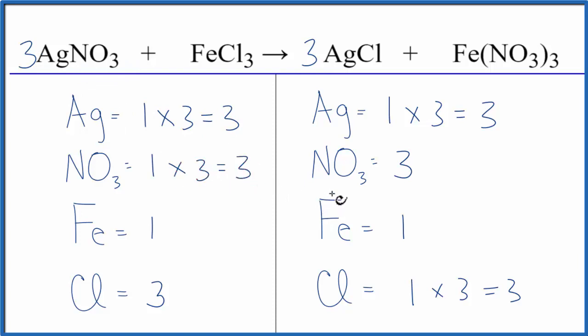And we're done. This equation is balanced. By counting the polyatomic ion, the nitrate, as one thing, because we have it here and again on this side, that greatly simplifies balancing equations.